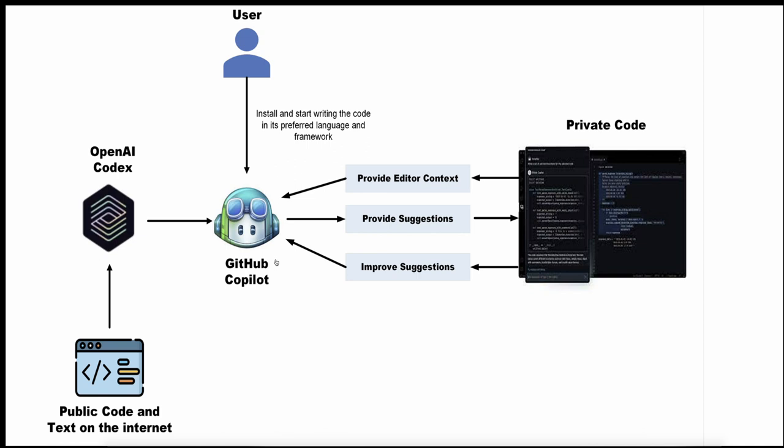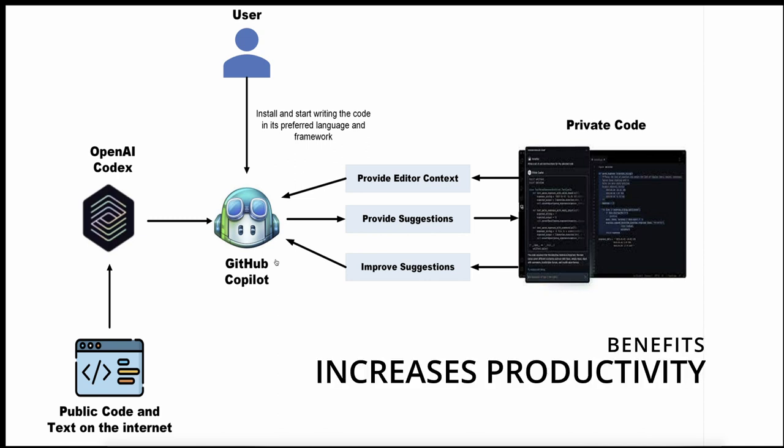If you look at GitHub Copilot, we will provide suggestions. The main benefit of this is productivity. We will use repeated codes. This is a basic flow.